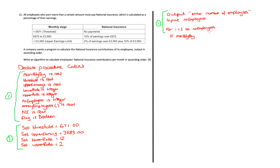Here is an example of where the exam board tries to confuse us. Monthly pay should actually be an array, so I change it to `monthly_pay[i]`. If that's less than the threshold of 671 pounds, then `national_insurance[i]` equals zero. National insurance should also be an array since we're storing values at position i — monthly pay and national insurance are stored at the same index but in different arrays.